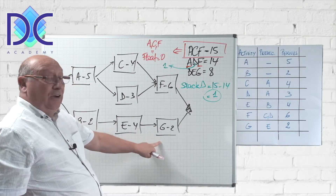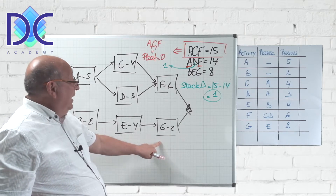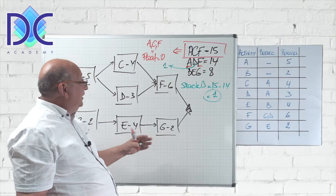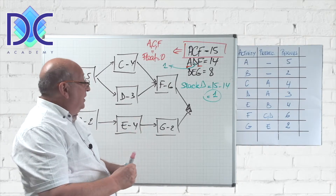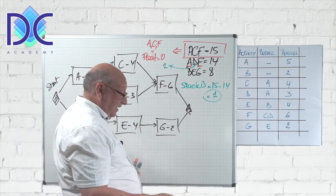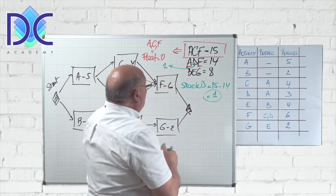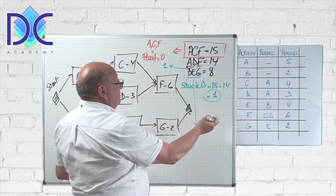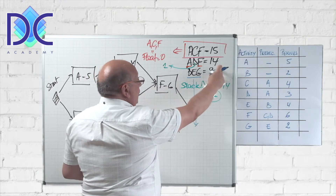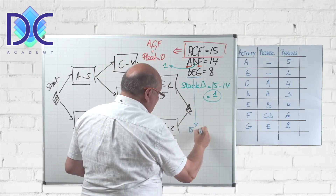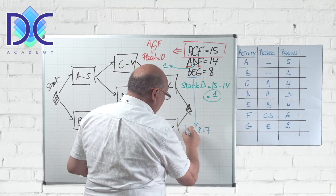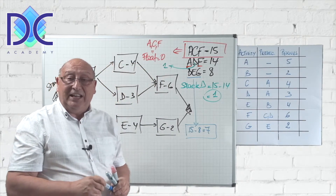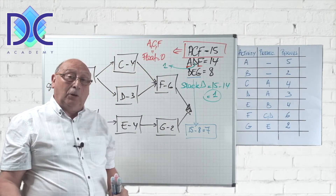B, E, and G are all on the same path, and there are no other paths interfering, so they all have the same slack. Their slack is fifteen minus eight, which equals seven. Using this method it is very easy to find the critical path and the slack of all activities.